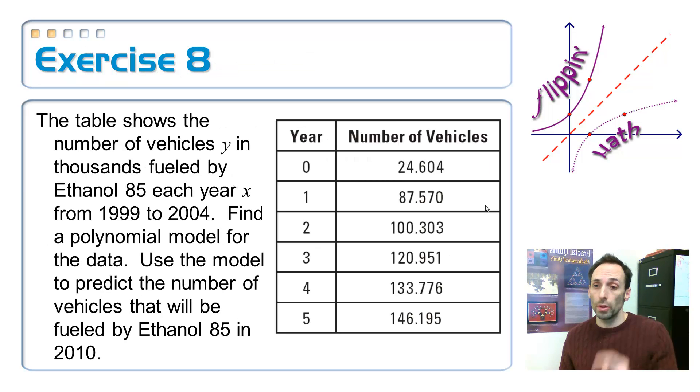So, here's our setup on this one. In the table, you've got the number of vehicles y in thousands fueled by ethanol 85, some sort of alternative fuel I guess, each year x from 1999 to 2004. So if I look on the table, 0 is going to correspond to 1999. Handy piece of information. Find a polynomial model for this data and use that model to make a prediction how many vehicles are going to be using ethanol 85 in 2010. How many were there? Because it's an old question now. Based on your model.